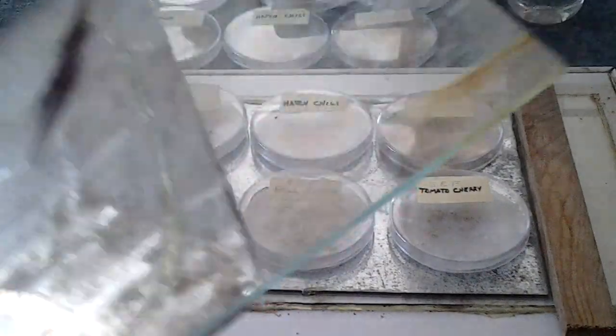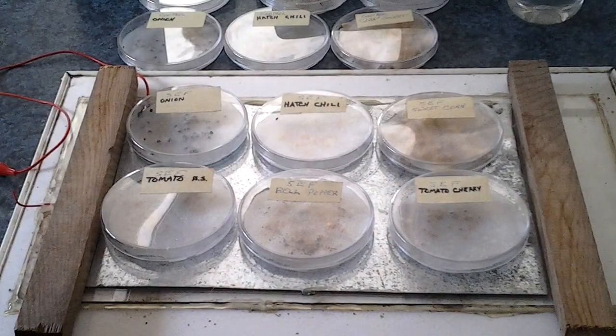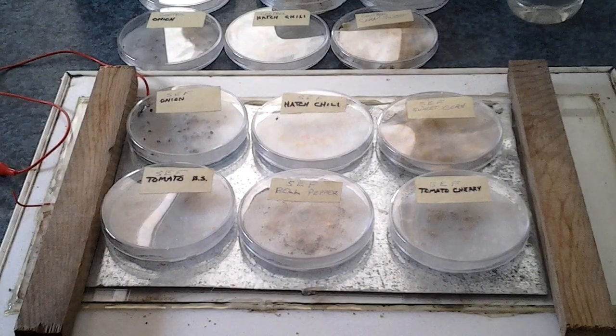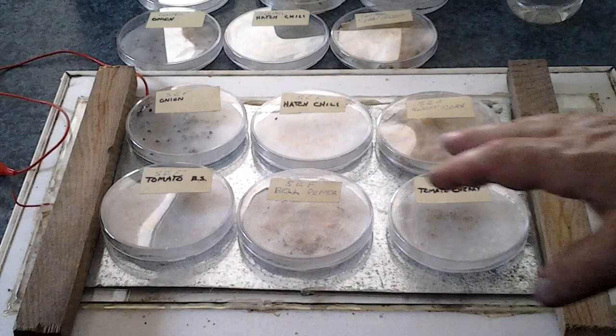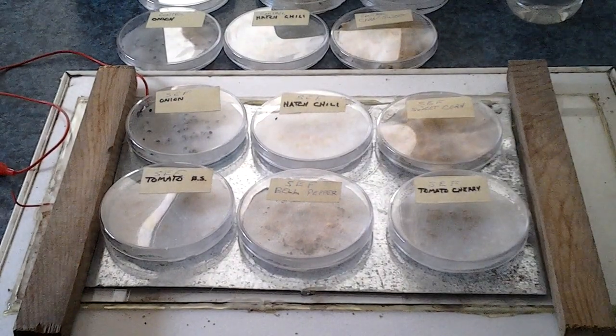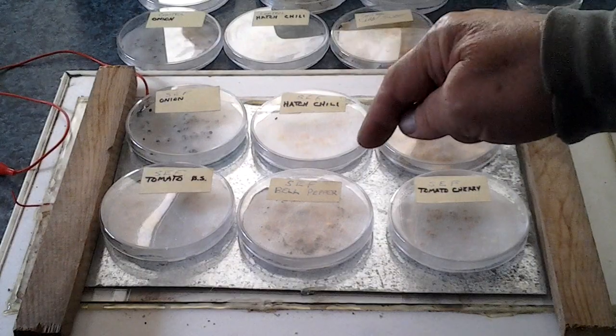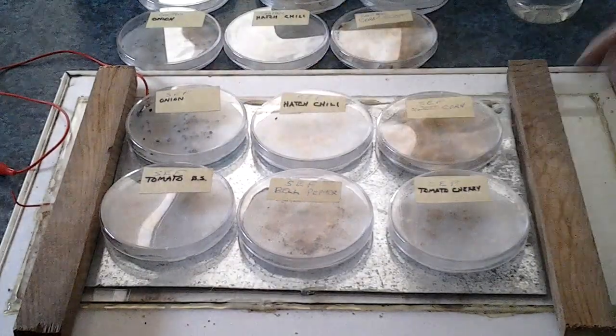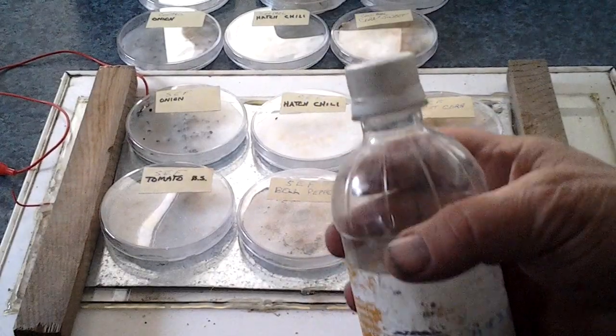Now I used three quarter inch pieces of wood, about two centimeters, so that I can slide these Petri dishes in. The Petri dishes have different seeds in there, starting with onion, hatch green chili, sweet corn, cherry tomatoes, bell pepper, and beefsteak tomatoes. And the water I used has a little bit of hydrogen peroxide in it.